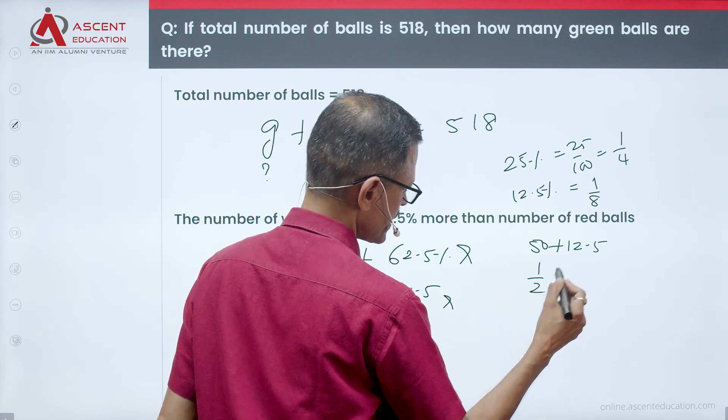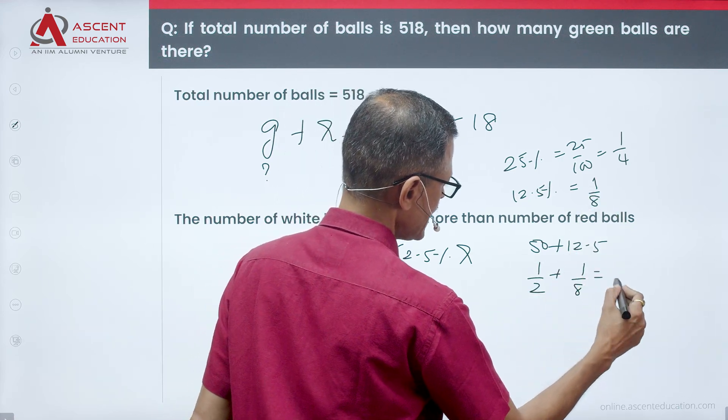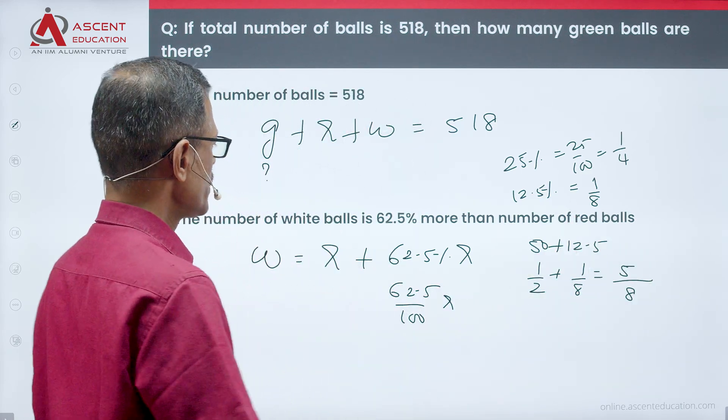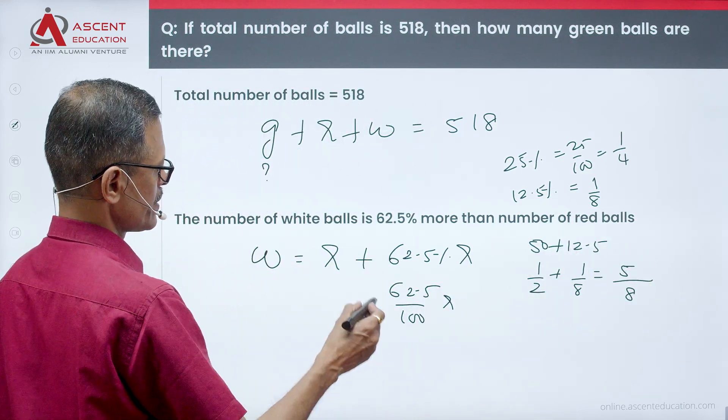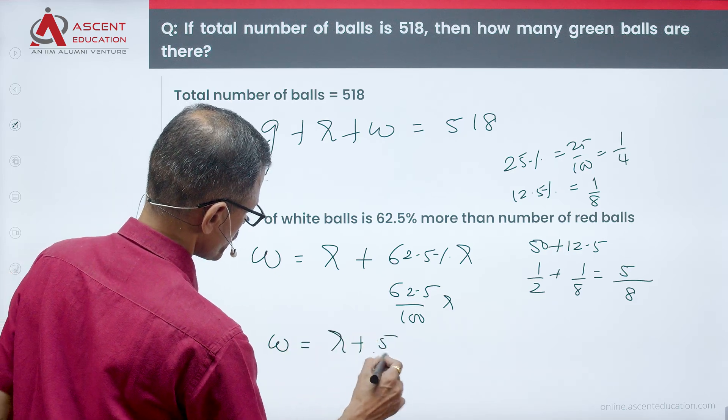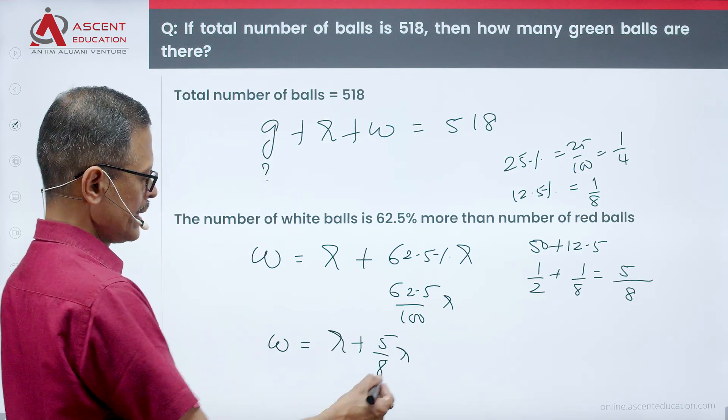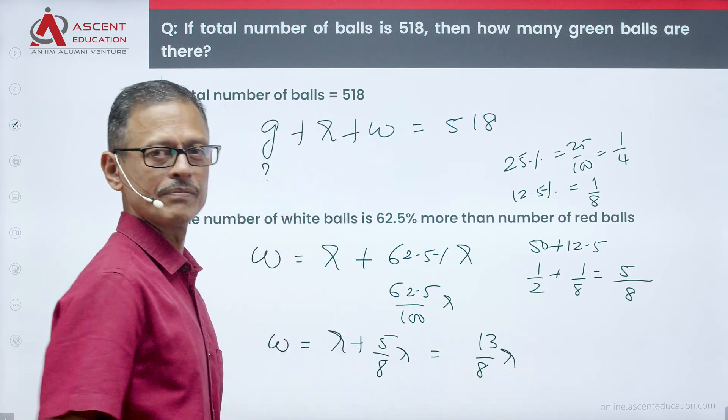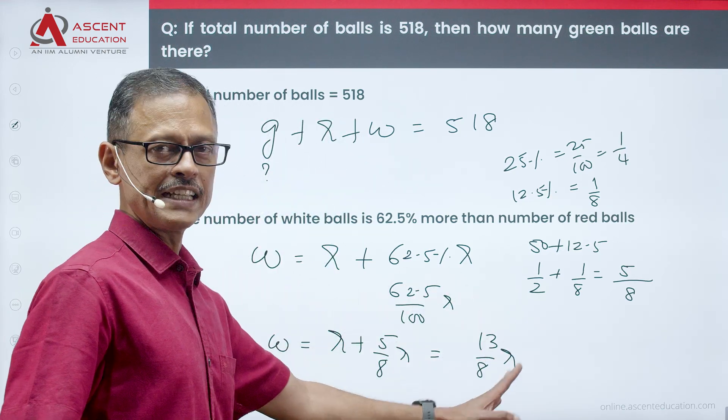62.5% is 50 plus 12.5. This is half, this is 1 by 8. 8 is a common denominator. 4 plus 1 is 5 by 8. So, essentially, we have W is equal to R plus 5 by 8R. 8 is a common denominator. It is going to be 8 plus 5, 13 by 8R. So, W is equal to 13 by 8R. This is the first thing that you have found out.